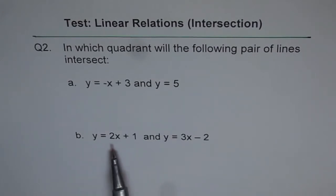Part B is y equals to 2x plus 1 and y equals to 3x minus 2. Will these intersect? Yes they will. Slopes are different. This line is steeper.